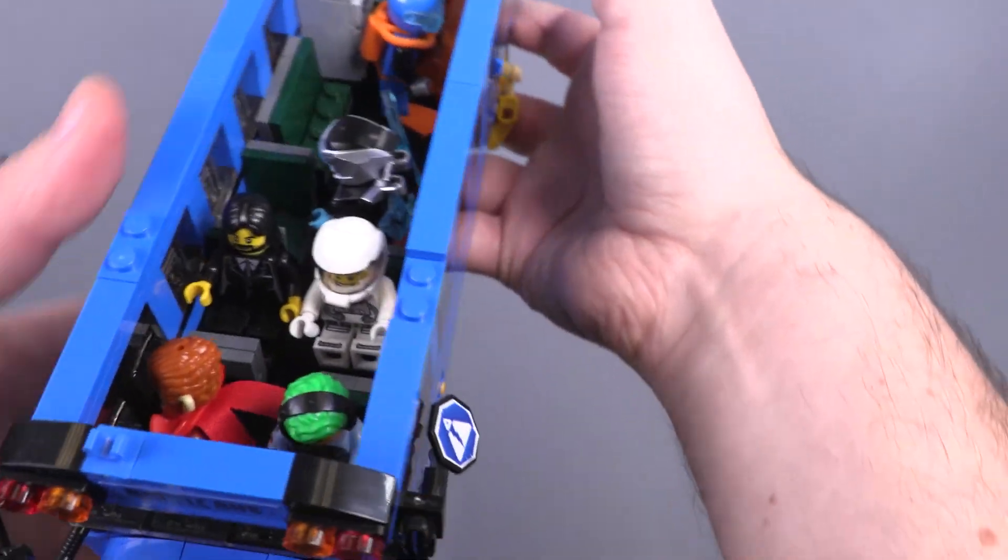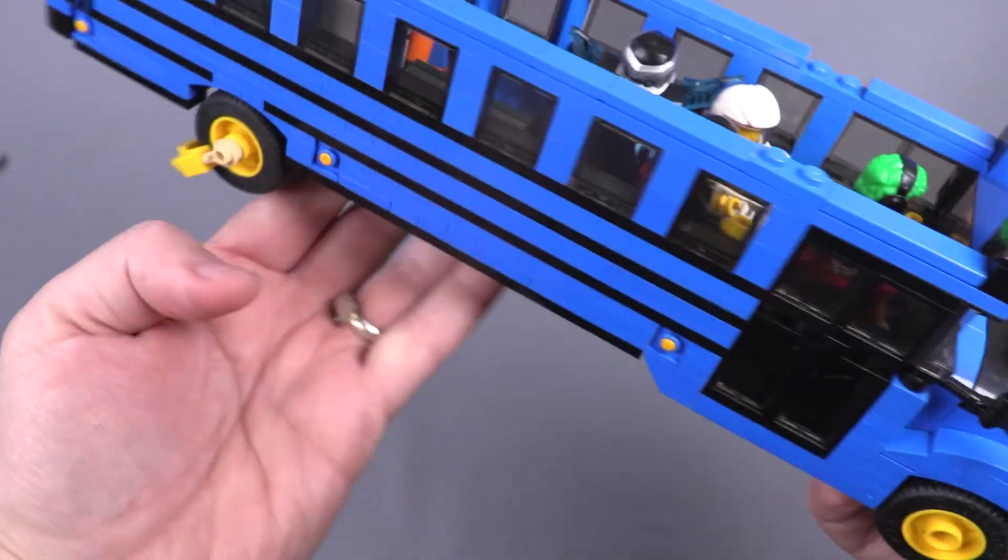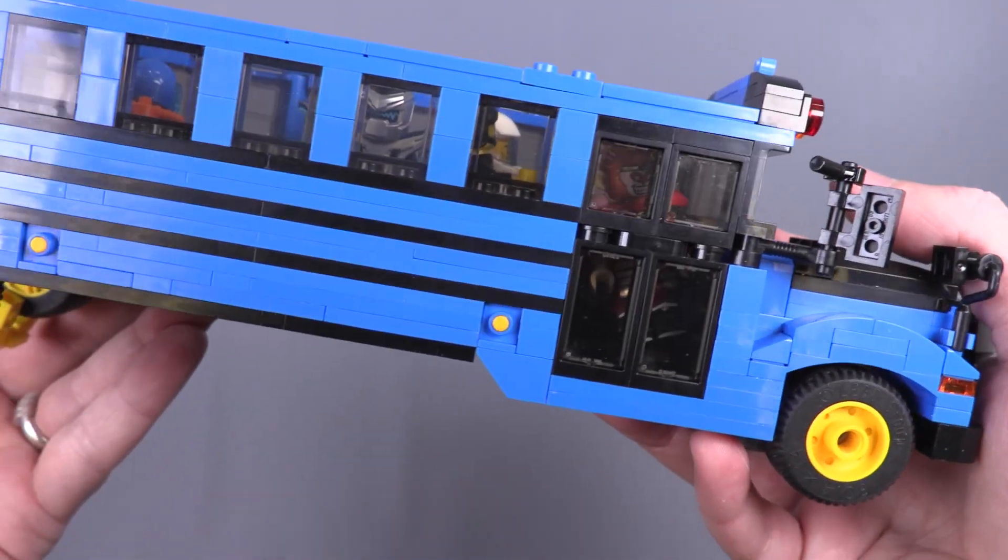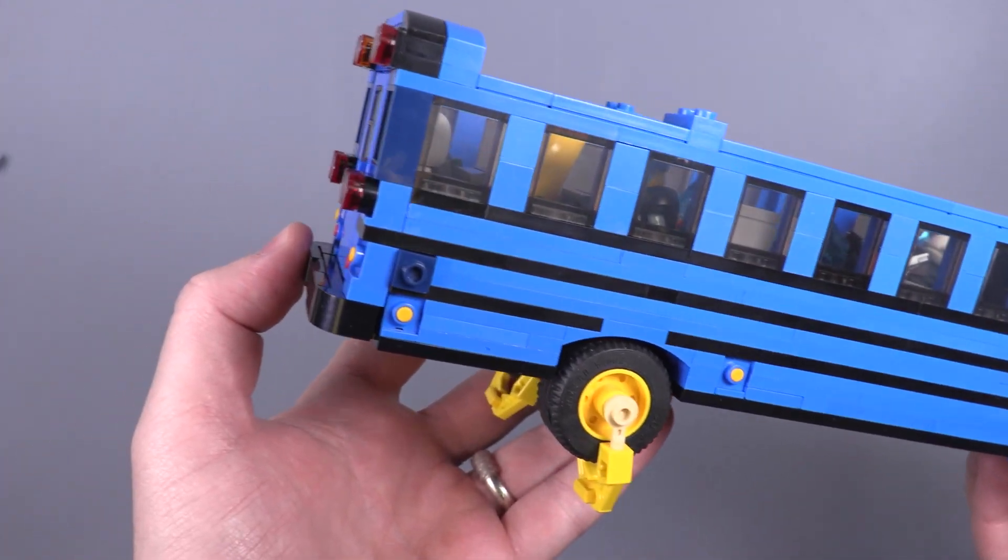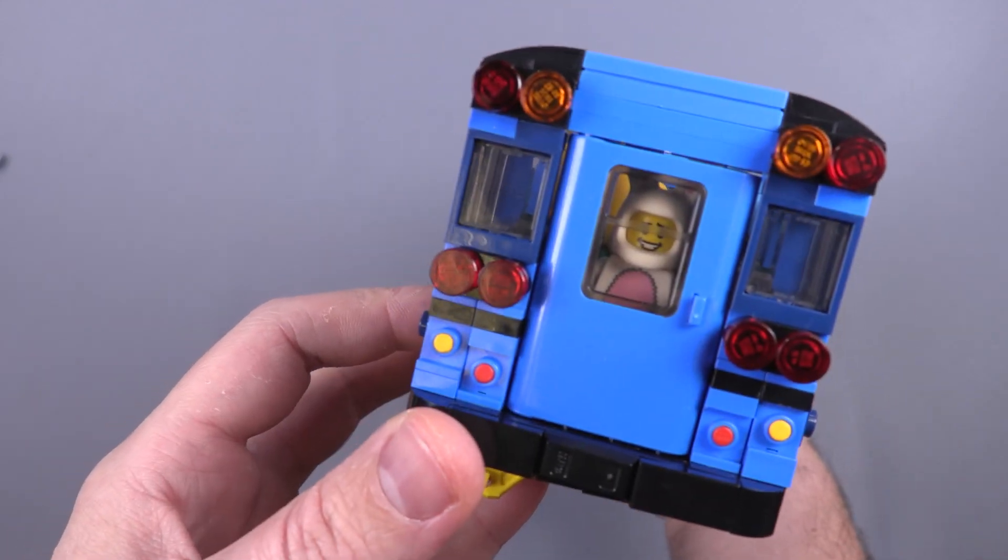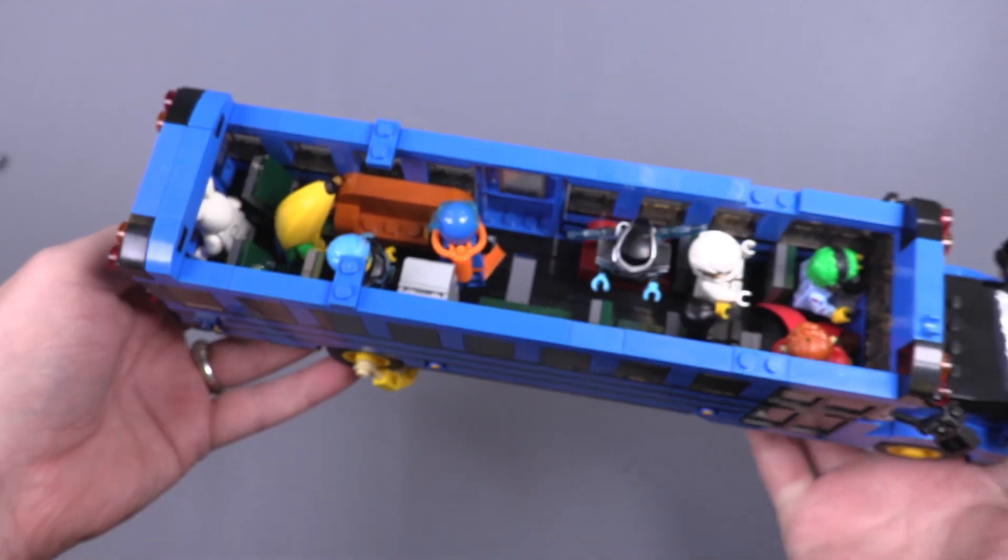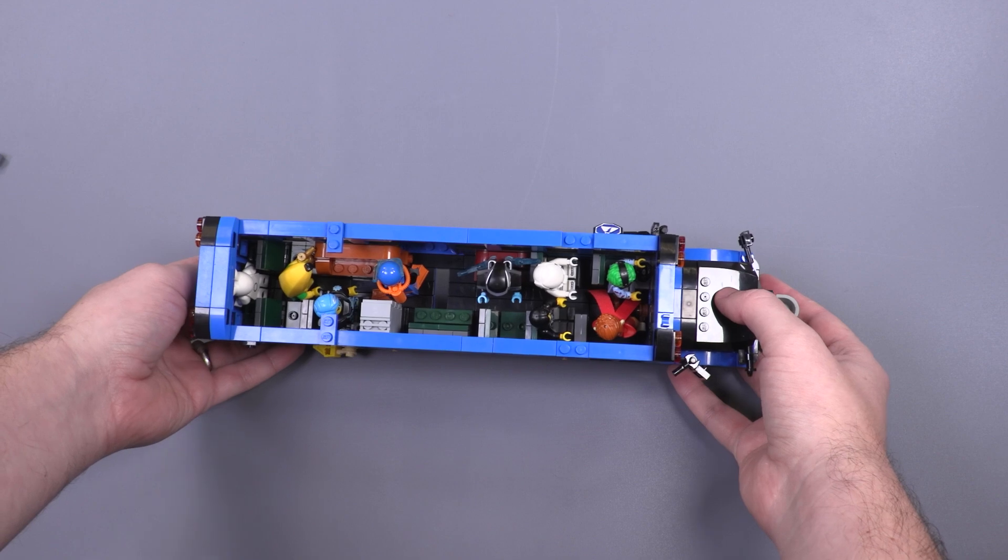This totals nine figures on the inside of the bus, though you can fit more—basically two full squads of four plus the driver. Even though the windows are tinted trans-black, the variation of colors of characters on the inside still makes it pretty easy to see that this is a very populated bus.